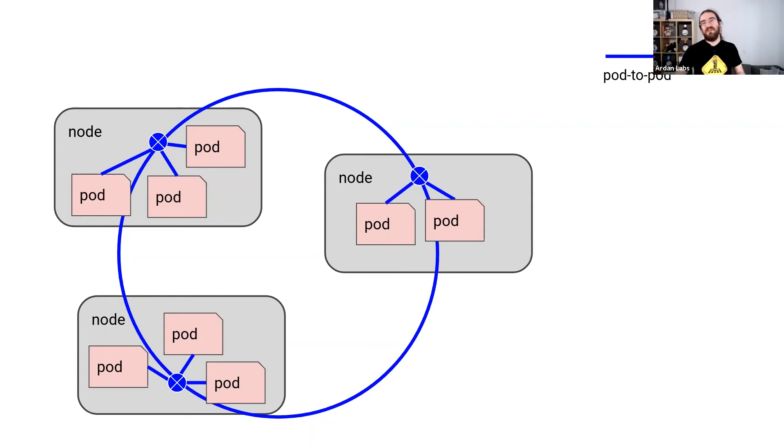send it to the other node. The other node receives the packet, decapsulates and delivers to the pod. That's what an overlay is.